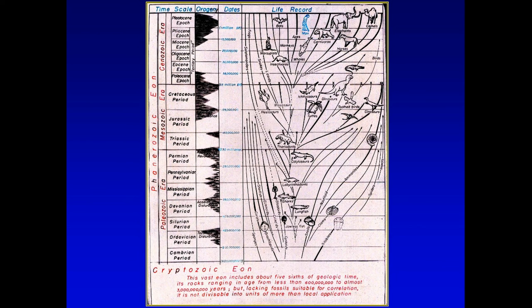This vast period of time — the Precambrian — includes about five-sixths of geologic time, based on absolute dating methods, but it lacks fossils suitable for correlation and can't be divided into units. Without the fossils, you can't really divide it up. Five-sixths of the Earth's rocks could have fossils, but don't.